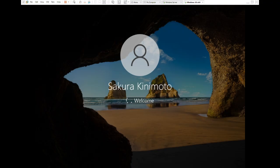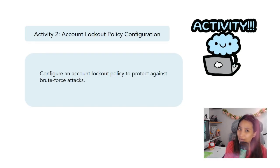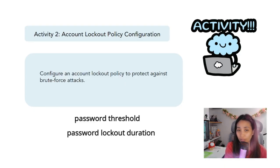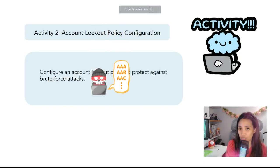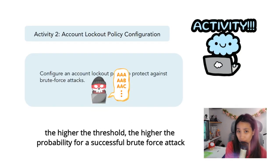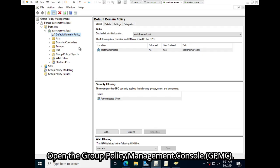That confirms our policy works. For our next activity we are going to do the account lockout policy configuration to protect against brute force attacks. We will set a threshold for how many password attempts are allowed before the account is locked out, and the duration of the lockout. The higher the threshold is set, the higher the probability of a successful brute force attack, giving attackers more opportunities to guess the password.